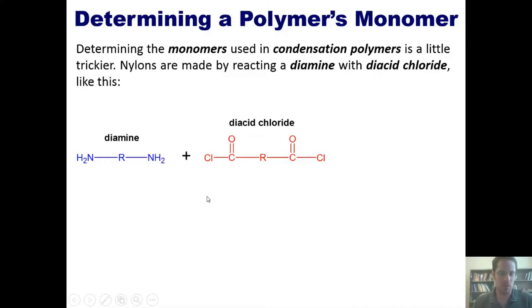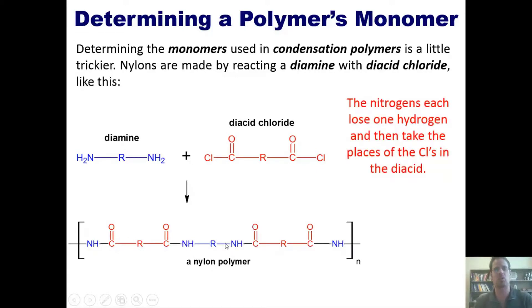When you take a diamine and react it with a diacid chloride, what occurs is they combine to form this in a repeating unit. The diamine part goes in here and the nitrogens basically take the place of the chlorines on the diacid chloride in a repeating unit again and again and again. So the nitrogens in this process each lose one hydrogen and take the places of the chlorines in the diacid. This is called a nylon polymer.